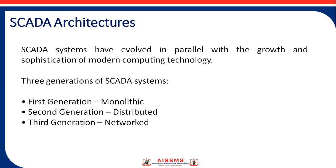The communications network is intended to provide the means by which data can be transferred between the central host computer servers and the field-based RTUs. The communication network refers to the equipment needed to transfer data to and from different sites. The medium used can be either cable, telephone, or radio. The use of cable is usually implemented in a factory, but is not practical for systems covering large geographical areas because of the high cost of cables.